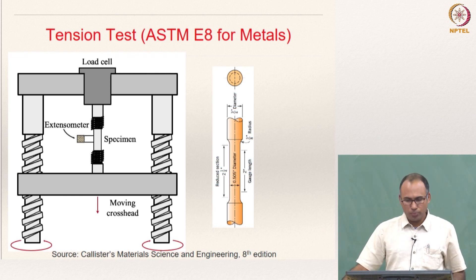Here you have a typical screw-driven UTM. The specimen is loaded between two crossheads. There is a load cell here which measures the load being applied. One crosshead is fixed and you move the other crosshead down so as to pull the specimen.